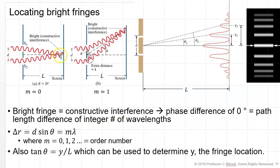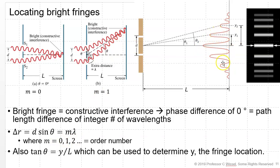Bright fringes occur at constructive interference — a phase difference of zero degrees — when the path length difference is an integer number of wavelengths. This occurs when delta r equals d sine theta equals m lambda, where m equals 0, 1, 2. This is the order number, which tells which fringe it is.